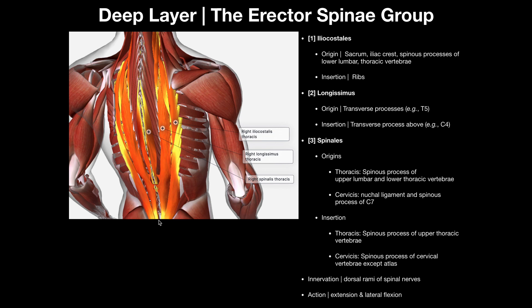If you look at the very base, they're all going to have a common origin — they may have some other origins, but at least at the bottom they all share what we call the common aponeurosis of the erector spinae, or the common erector spinae aponeurosis. All three muscles within the erector spinae group are going to be powerful back extensors. But if one side contracts, you're going to have lateral flexion of the spine; if both sides contract at the same time, you're going to have back extension or spinal extension. Let's look at each one individually, starting with the most lateral.